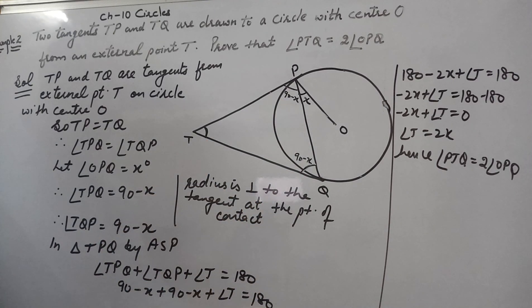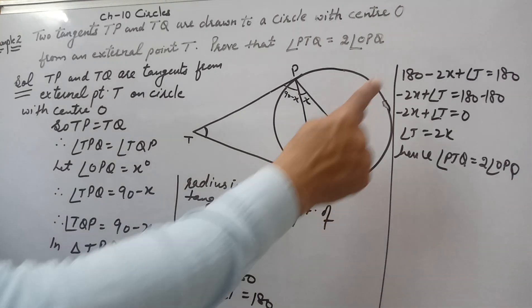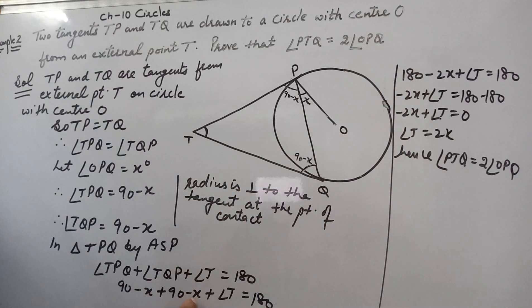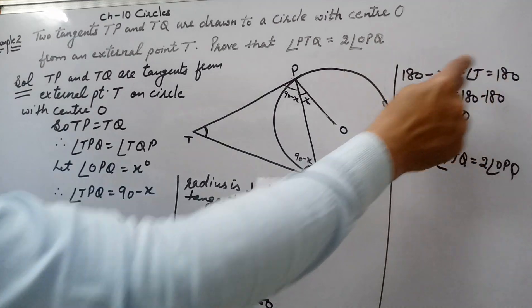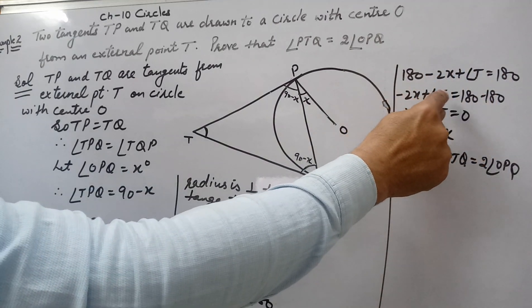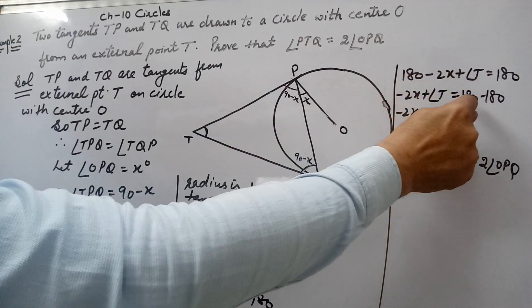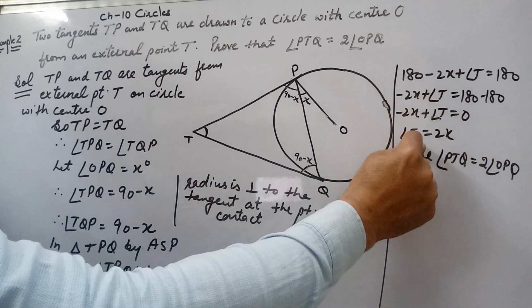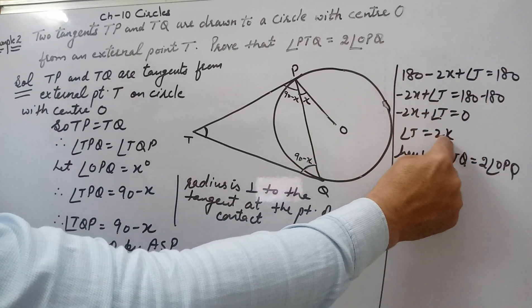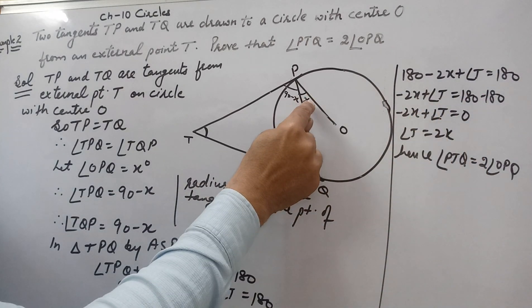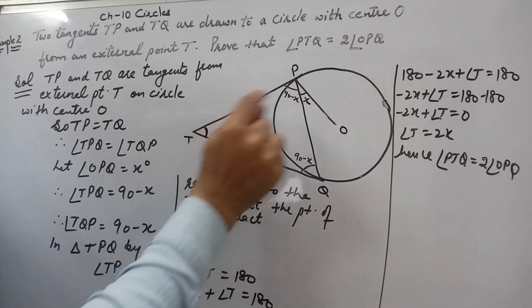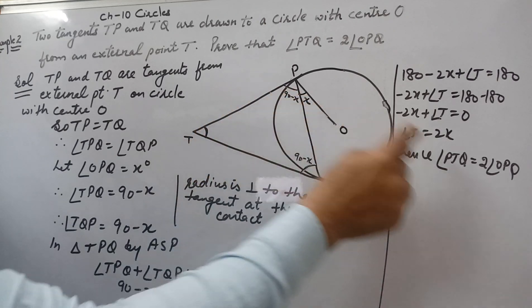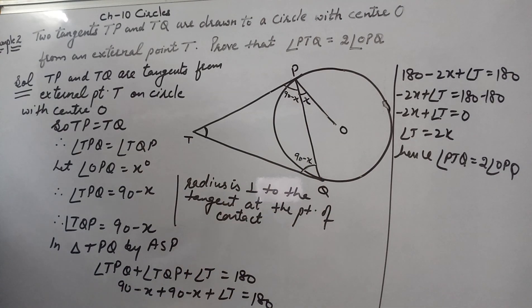Applying the angle sum property in triangle PTQ: angle TPQ + angle TQP + angle T = 180°. Substituting: (90 − x) + (90 − x) + angle T = 180°. This gives 180 − 2x + angle T = 180°, so angle T = 2x. Therefore angle PTQ is double of angle OPQ — hence proved.